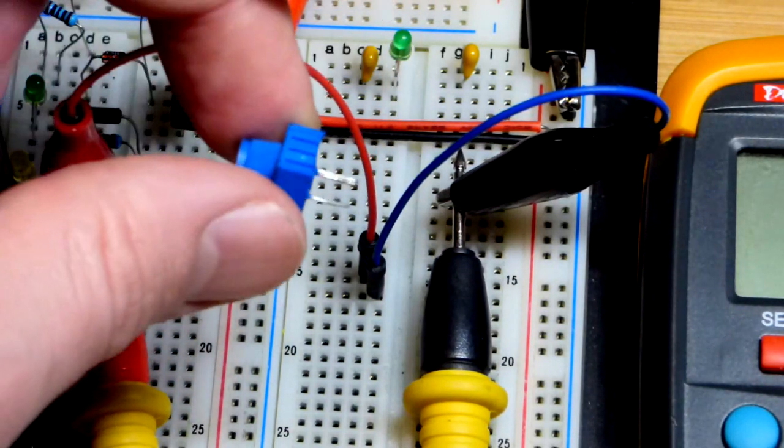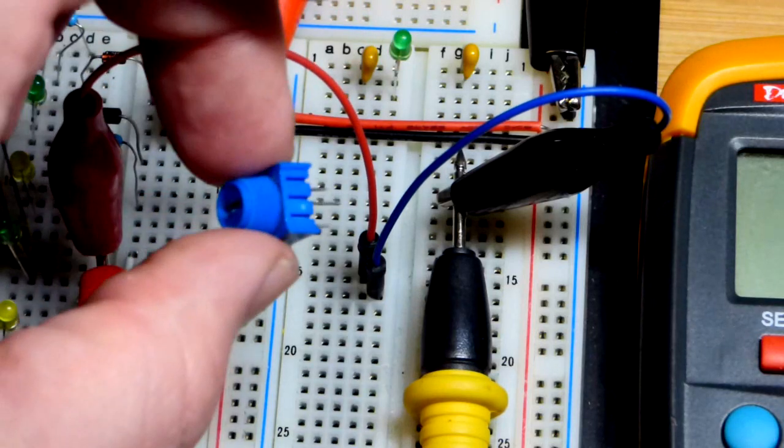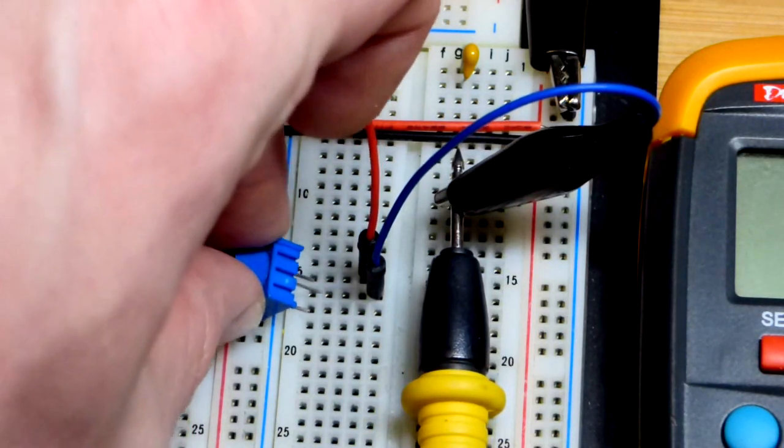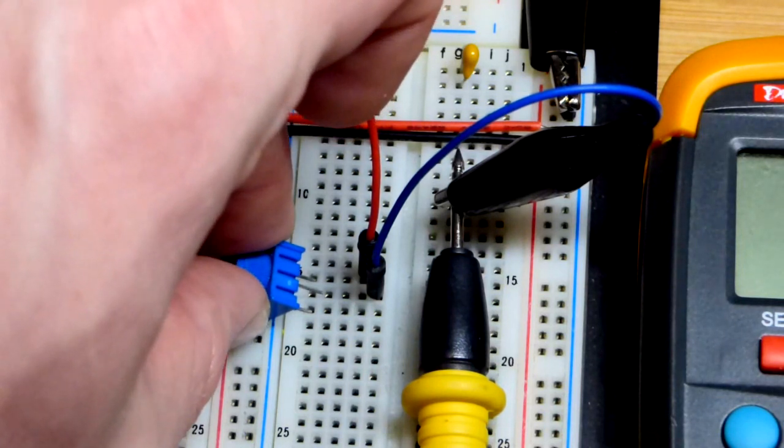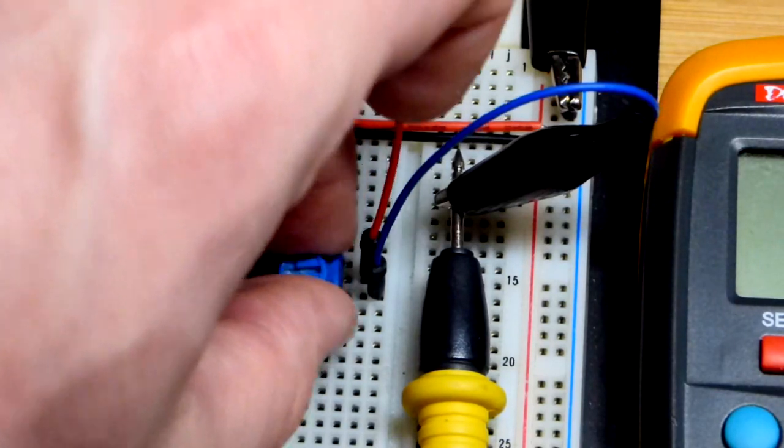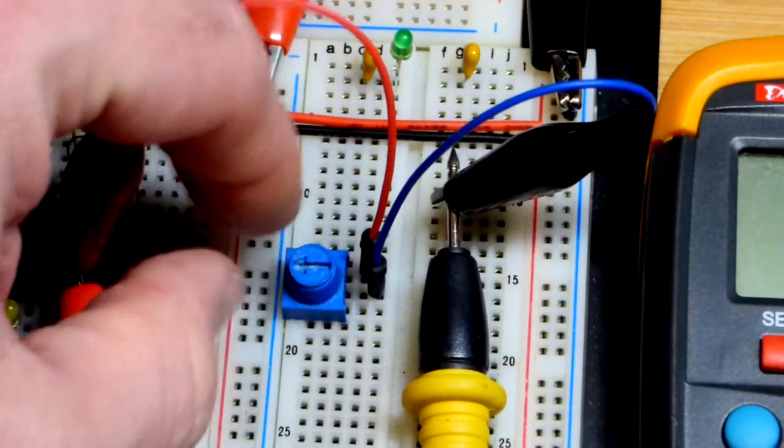I did the same with the black probe there. This trim pot I'm using, I don't use that other kind anymore, just has three little metal pins in there so it fits in the board really nicely and it seems like it's more reliable than the other ones I had. You can see we're going from one end, the top there, to the middle. The middle is connected to the wiper.